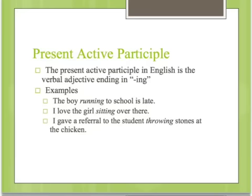The first participle we're going to learn about is the present active participle. The present active participle in English is the verbal adjective that ends in -ing. For example, 'the boy running to school is late' — running is an adjective from the verb run that modifies boy. 'I love the girl sitting over there' — sitting modifies girl and tells you which girl. 'I gave a referral to the students throwing stones at the chicken' — throwing is a participial adjective from throw that modifies students and takes the direct object stones, which is not associated with the main verb.